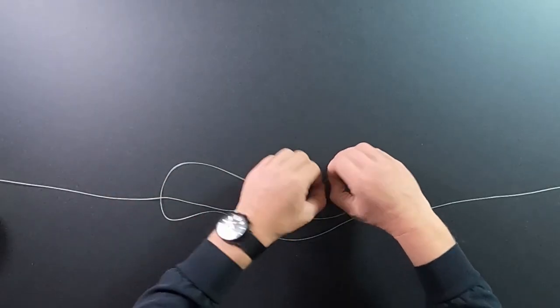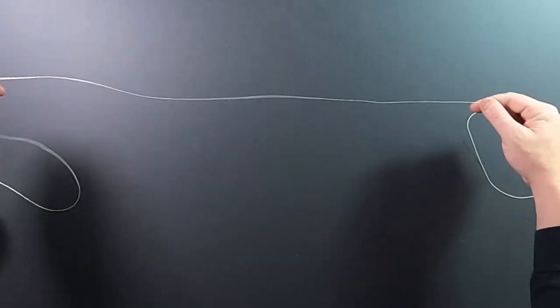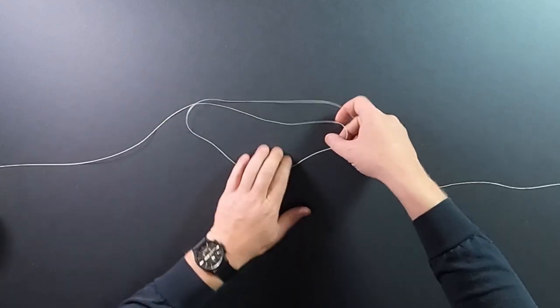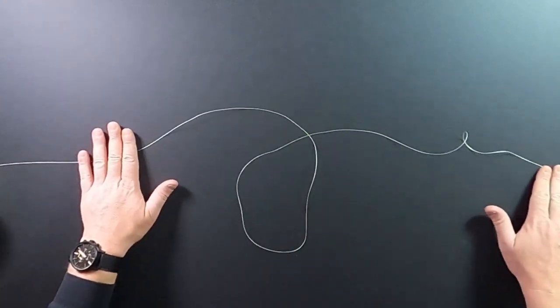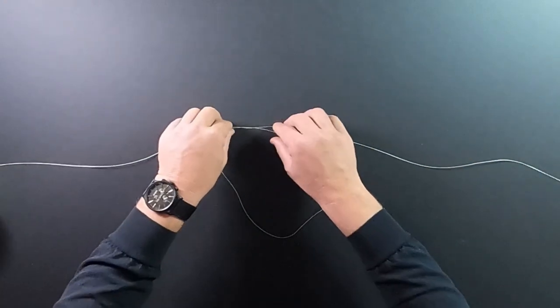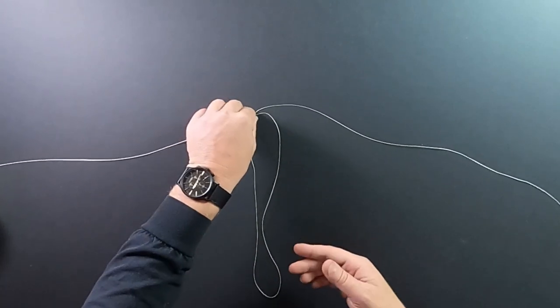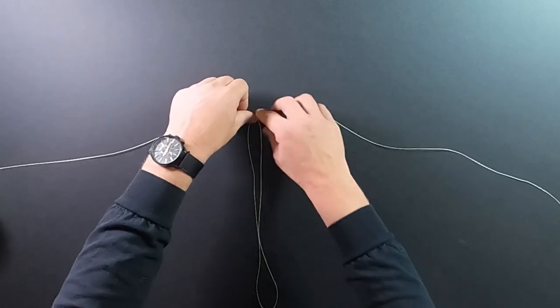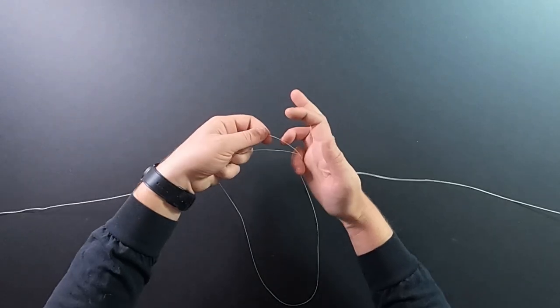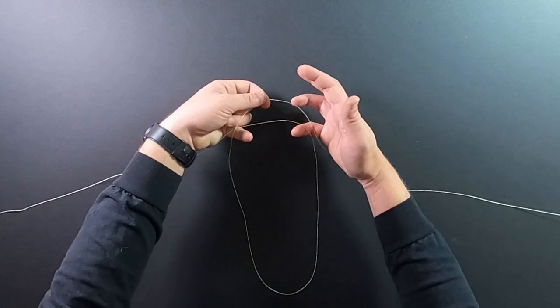So the first thing you're going to do, you take your line and you're going to make a loop, just like that. Now, depending on how long your loop is, is going to be how far out your hook is going to be from your line. You want something about this size here. So you're going to take them in your fingers just like this, this side with the two sides here.